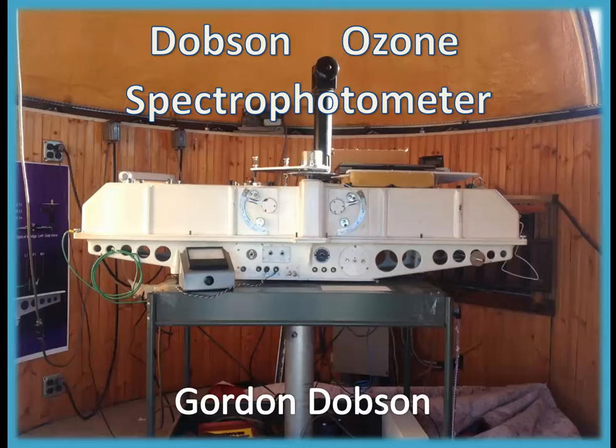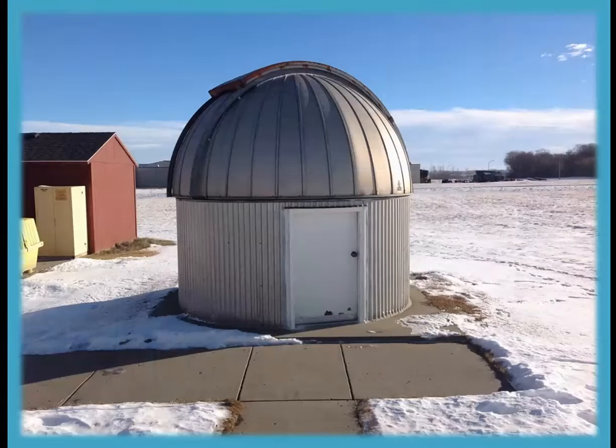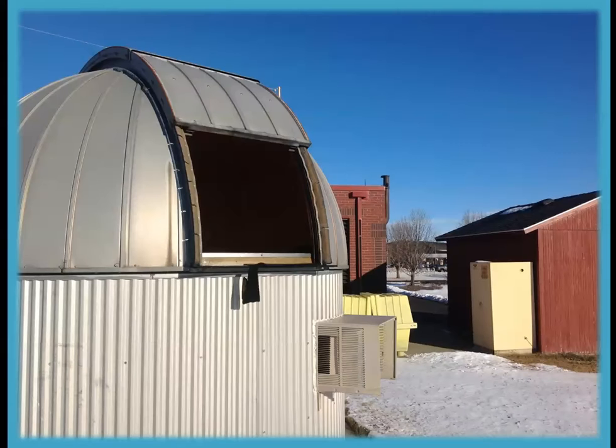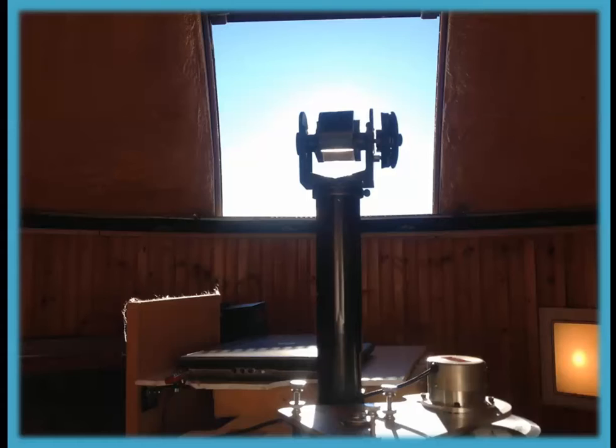The Dobson was invented back in 1924 by Gordon Dobson, and besides a few electronic upgrades, the machine has changed very little since. Here at the Bismarck office, the Dobson gets its own building, which is located behind the main office. The building is climate controlled and has a rotating and retractable roof, so direct solar radiation, or sunlight, at different times of the day can reach the Dobson.